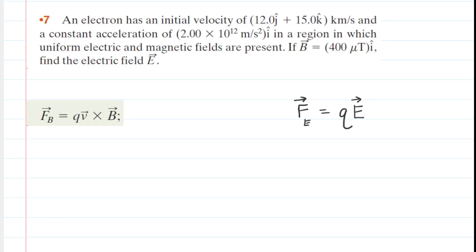Please take a moment to pause the video and reread this problem before listening on. In this question, we have two different kinds of fields at work: a uniform electric and uniform magnetic field, both of which are present. Because we have two kinds of fields and a charged particle moving through them, this charged particle is going to experience two different kinds of forces — a magnetic force as defined by this equation, as well as an electric force given by this equation.